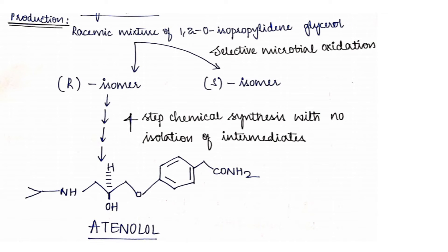For your exam, if they ask about atenolol or synthesis of optically pure drugs, observe the first step: a racemic mixture, then you need a precursor, and using microorganisms you can separate R and S. With a four-step chemical synthesis and no isolation of intermediates, you get the optically pure drug atenolol. In a flowchart format, also mention the microorganism names — that will be useful.